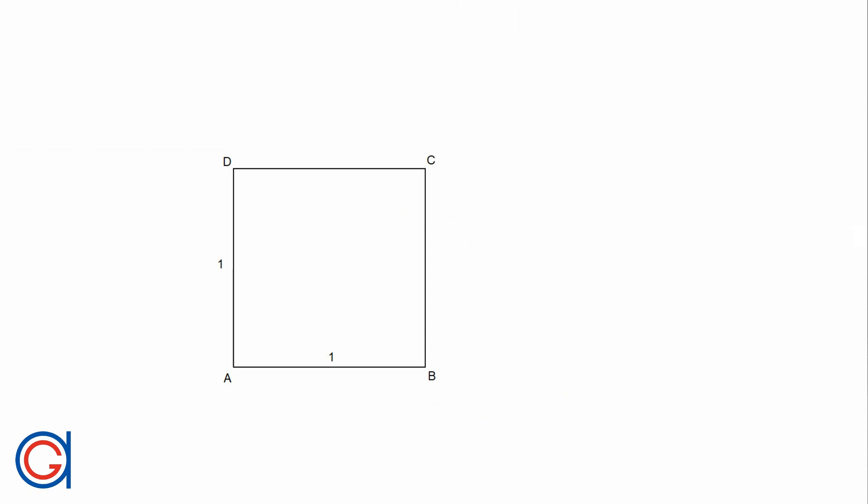Hello, today we are going to learn how to draw any root rectangle from root 2 to root infinity. The definition of a root rectangle is a rectangle in which the ratio of the longer side divided by the shorter side is always equal to the square root of any integer, such as the square root of 2, the square root of 3, etc.